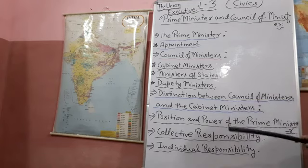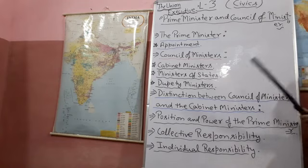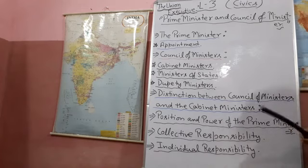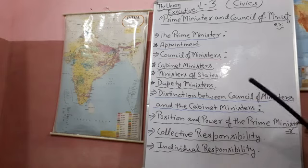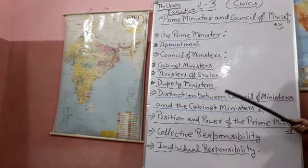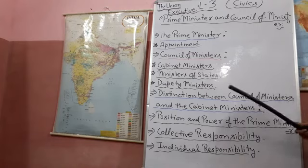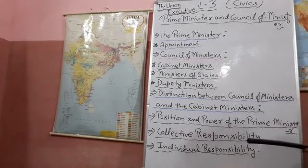Next, the Constitution says that there shall be a Council of Ministers to aid and advise the President in the exercise of his functions. In fact, the President is to act on the advice of the Cabinet in all matters. Since the Council of Ministers as a whole rarely meets, it is the Cabinet Ministers who are consulted by the Prime Minister for information and advice. Thus, the Cabinet is an inner body within the Council of Ministers. It acts in the name of the Council of Ministers and exercises all powers on its behalf.